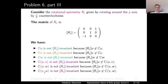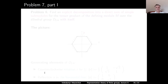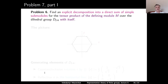Since none of the potential submodules of M are invariant under both Rₓ and Ry, M does not have proper submodules and is therefore simple (irreducible). This completes the solution of Problem 6. Problem 7: Find an explicit decomposition into a direct sum of simple submodules for the tensor product of the defining module M over the dihedral group D_{2×6} with itself.